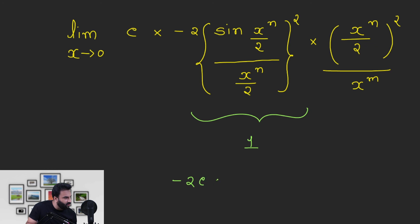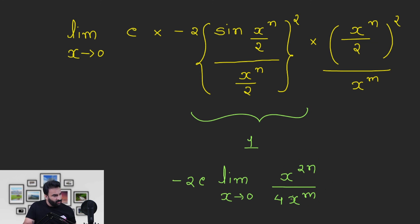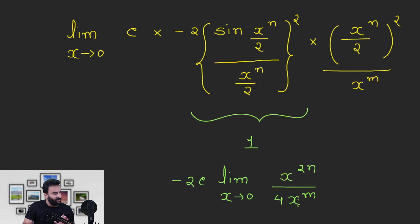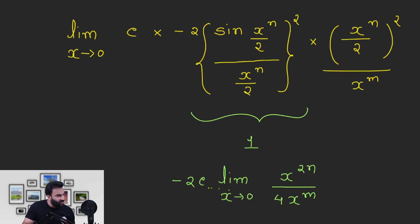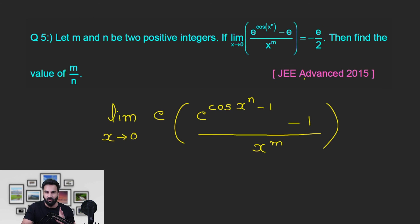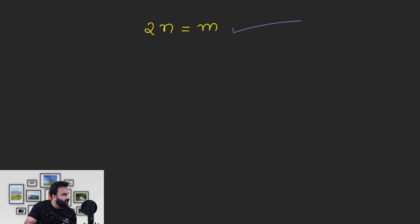Minus 2e। तो यहाँ पर यह बात देखो कि अगर यह x की power कुछ भी बच गई तो limit की value — या तो 0 आएगी अगर numerator बड़ा हो, या tending to infinity या minus infinity हो जाएगी अगर denominator बड़ा हो। अपने को चाहिए finite value — तो यहाँ पर x बचना नहीं चाहिए — इसका मतलब यह हुआ 2n should be equal to m। और अगर 2n equal to m हुआ तो यह चीज़ खड़ी आएगी — value आएगी minus 2e by 4 = minus e by 2। So this is correct — m by n की value = 2. बस।